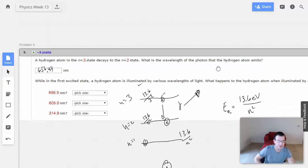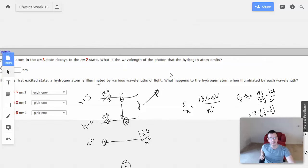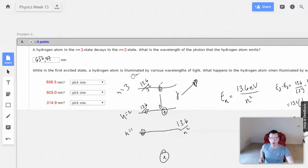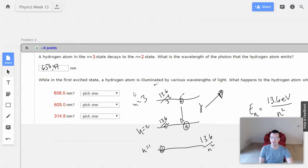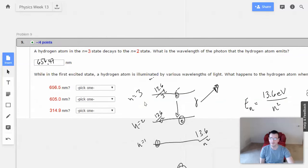656.47 nanometers. And that is the wavelength of the photon that the hydrogen emits when an electron decays from n equals 3 to n equals 2. Yeah, that seems reasonable.